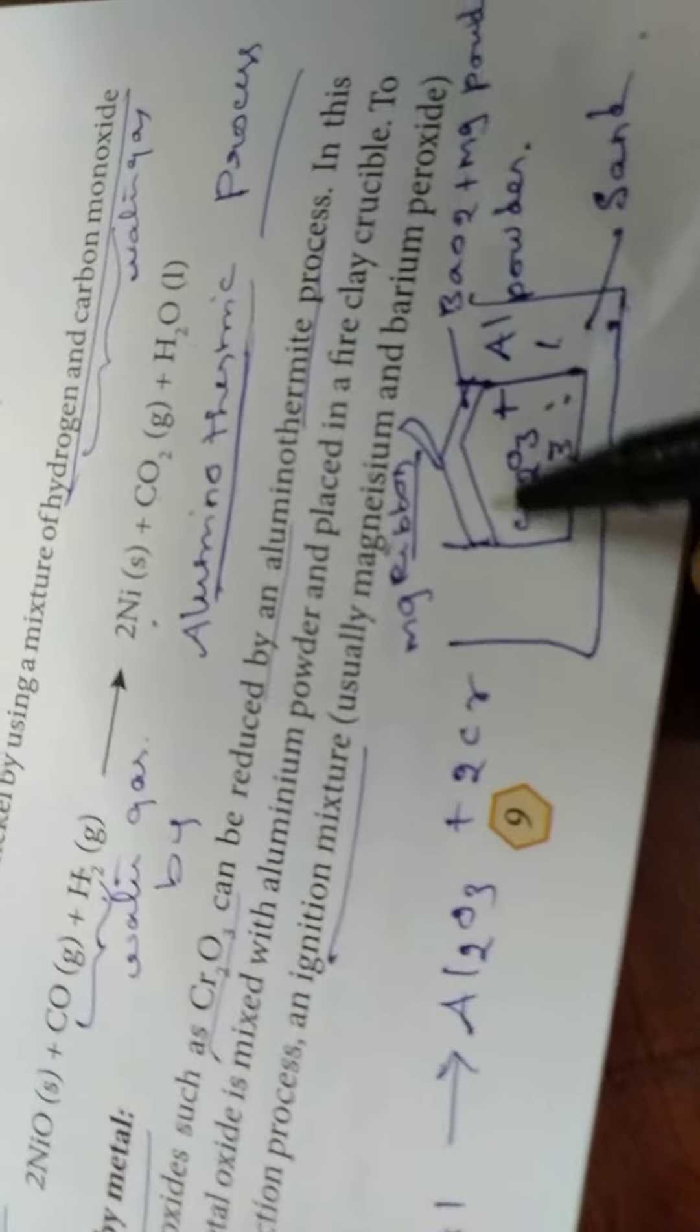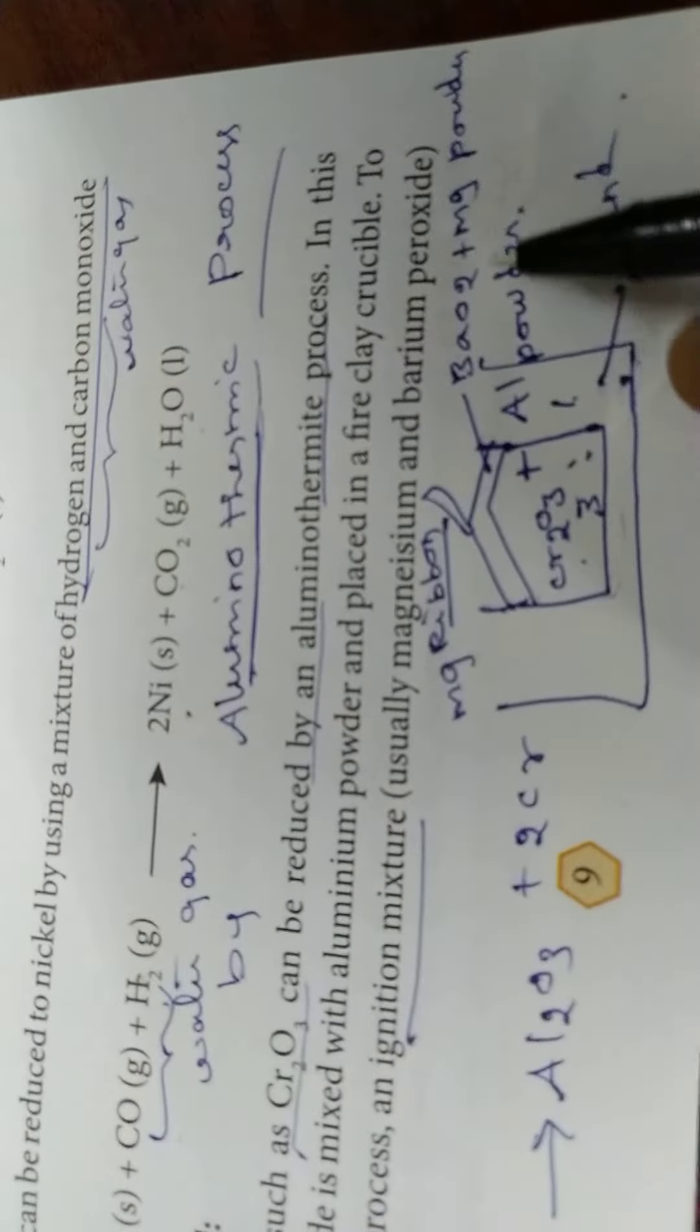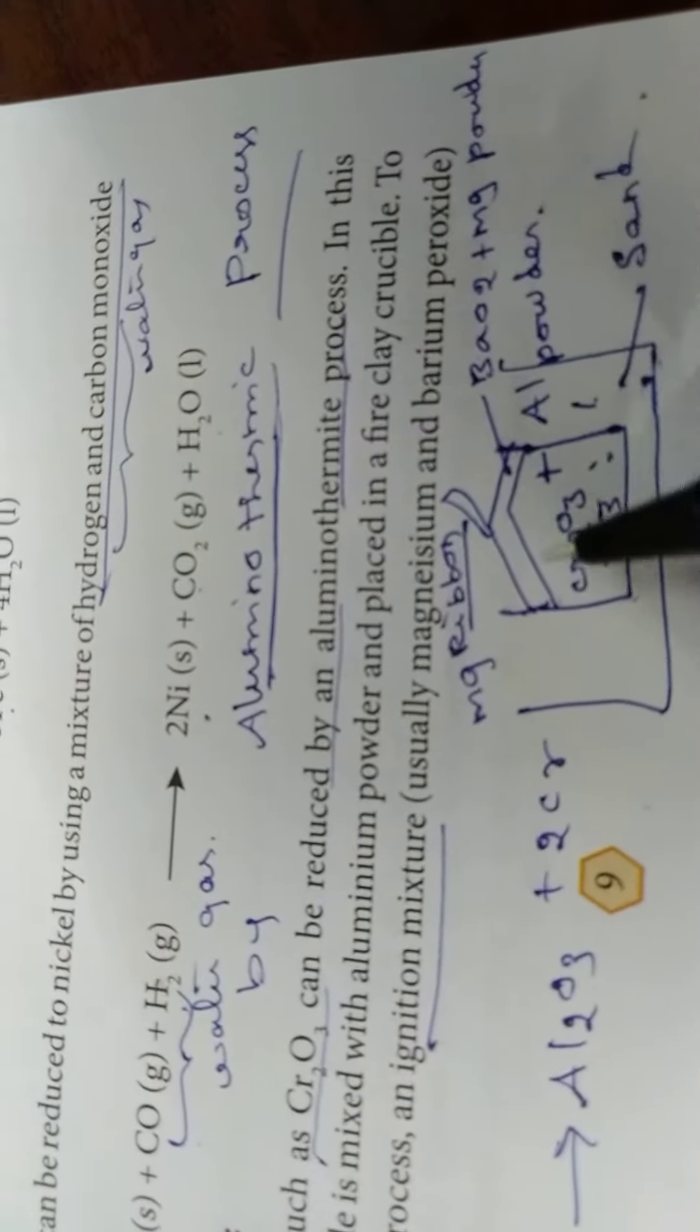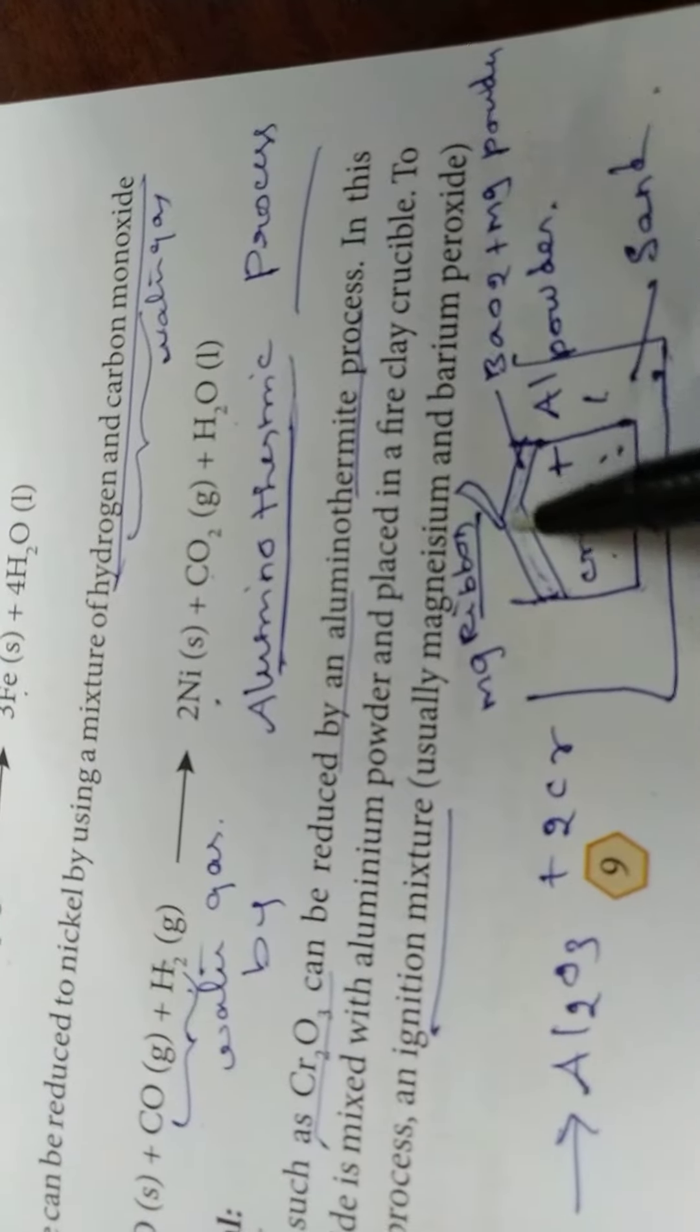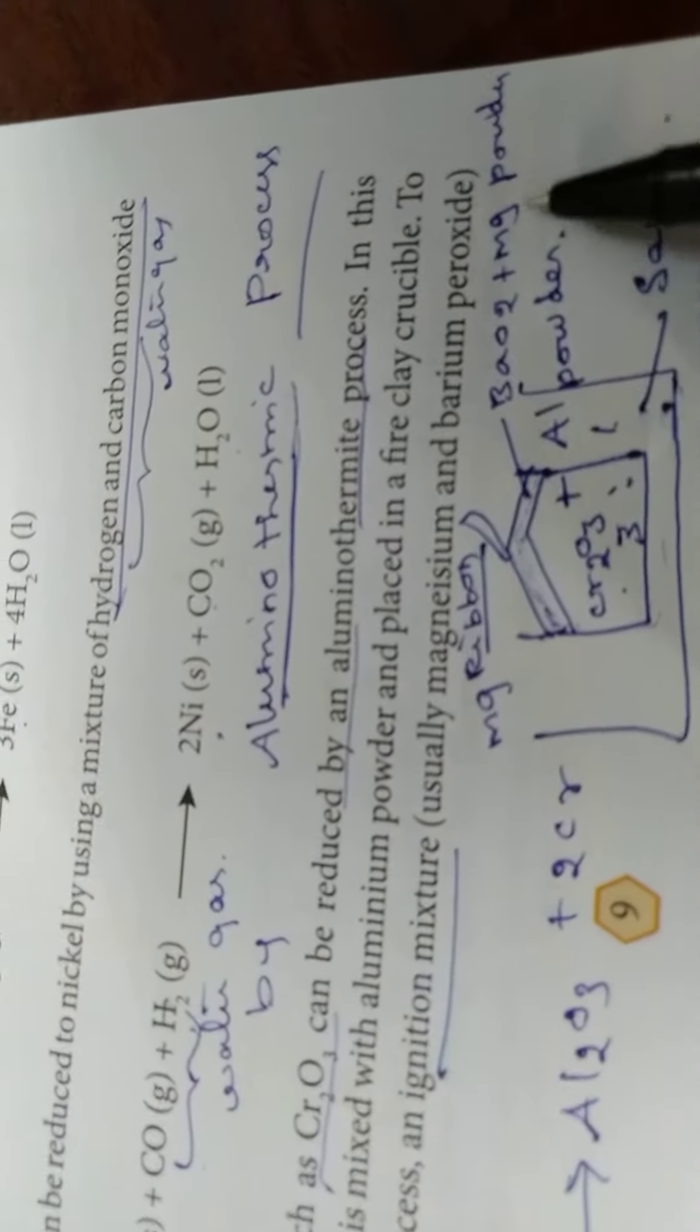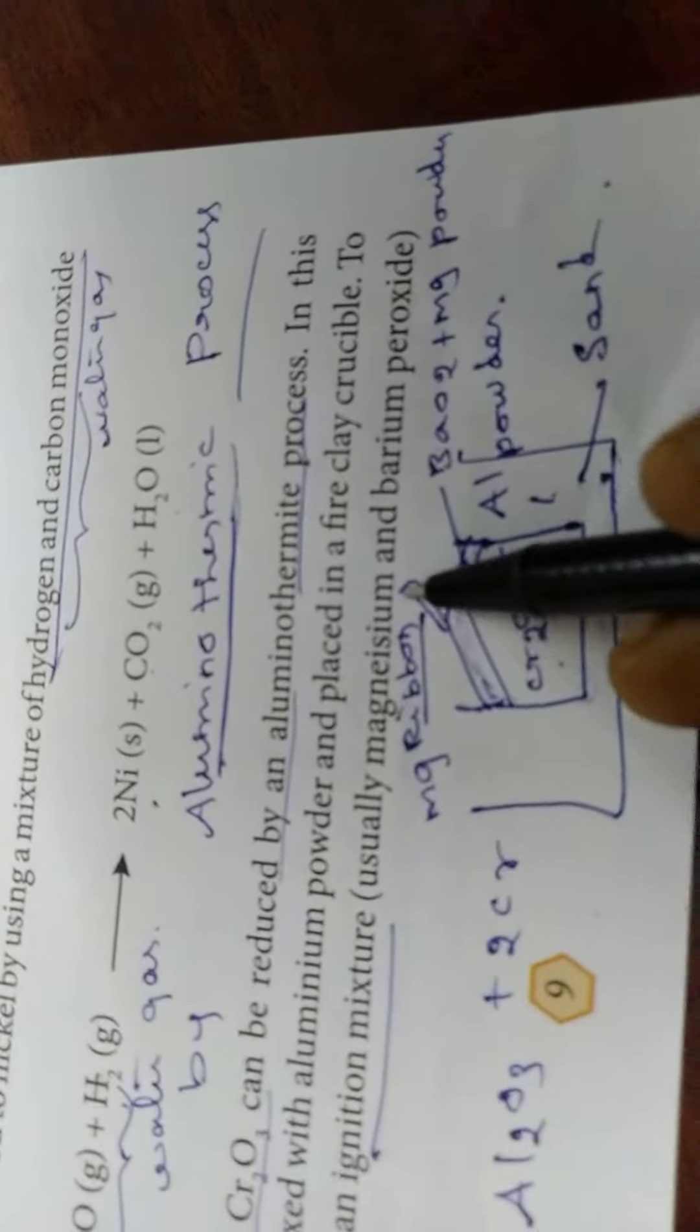That is covered with a layer of Barium Peroxide with Magnesium Powder, called the Ignition Mixture. This is a mixture of Barium Peroxide and Magnesium Powder. And at the top, a Magnesium Ribbon is inserted.